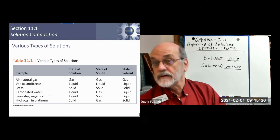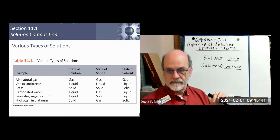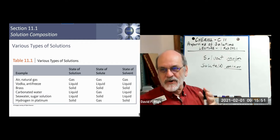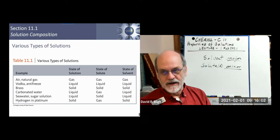Brass is a solution of two solids — primarily copper as the solvent and zinc or nickel as the solute — sometimes with other minor components. Those two solids go together to make a solid solution. Of course, you can't just press two solids together; you have to melt them, mix the liquids, and then when they solidify, you have a solid solution.